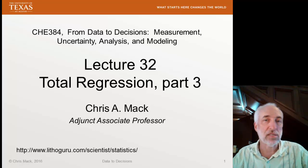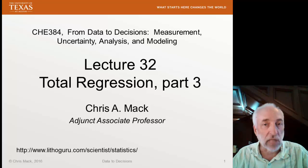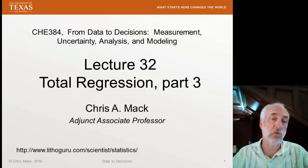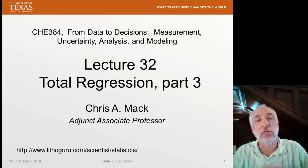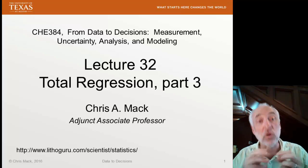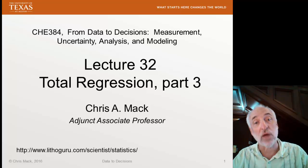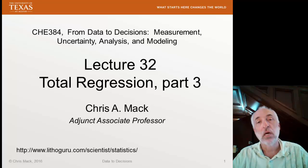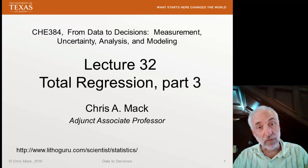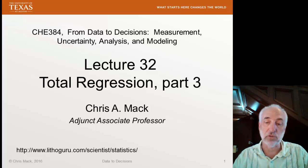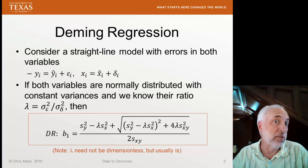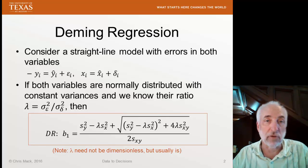Hello and welcome to From Data to Decisions. I'm Chris Mack, your instructor for this class, and this is lecture 32, the third part in a series of lectures on the topic of total regression. Total regression is what we do when we have errors in both the x variables and the y variables in our regression. This is also called errors in variables or sometimes measurement error models. I'd like to bring up another method of doing total regression under certain special circumstances — it's called Deming regression.